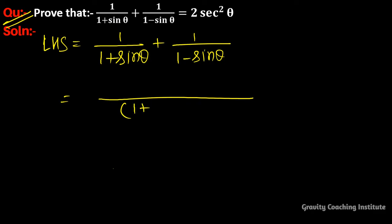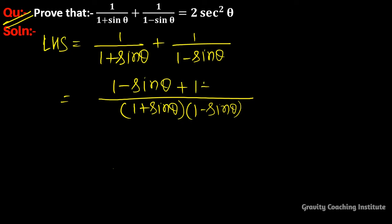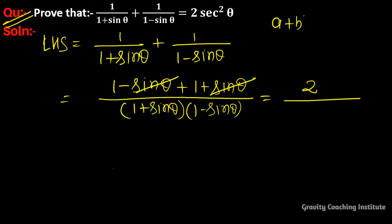Taking the common denominator (1+sinθ)(1−sinθ), the numerator becomes (1−sinθ) + (1+sinθ). The sinθ terms cancel, leaving 2 in the numerator. We now apply the algebraic identity (a+b)(a−b) = a²−b².